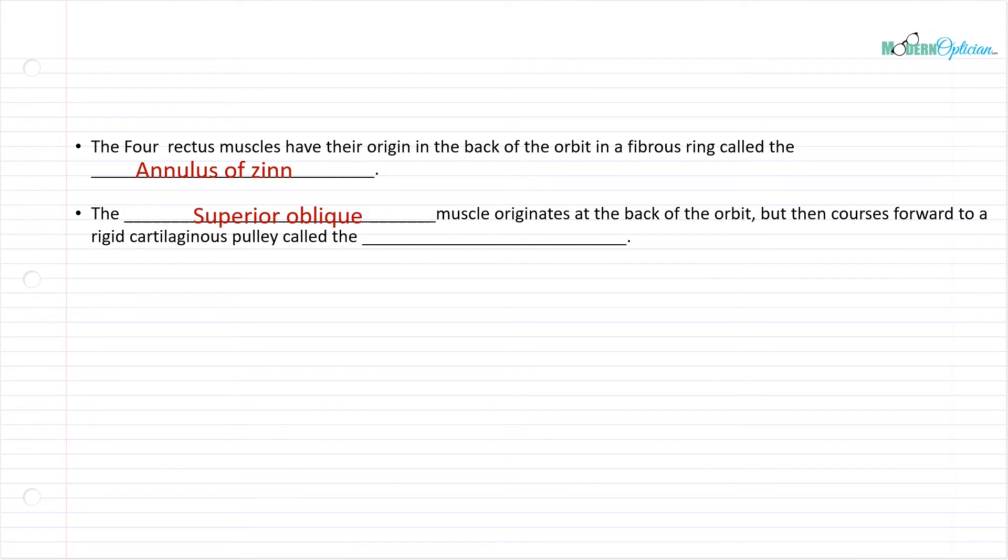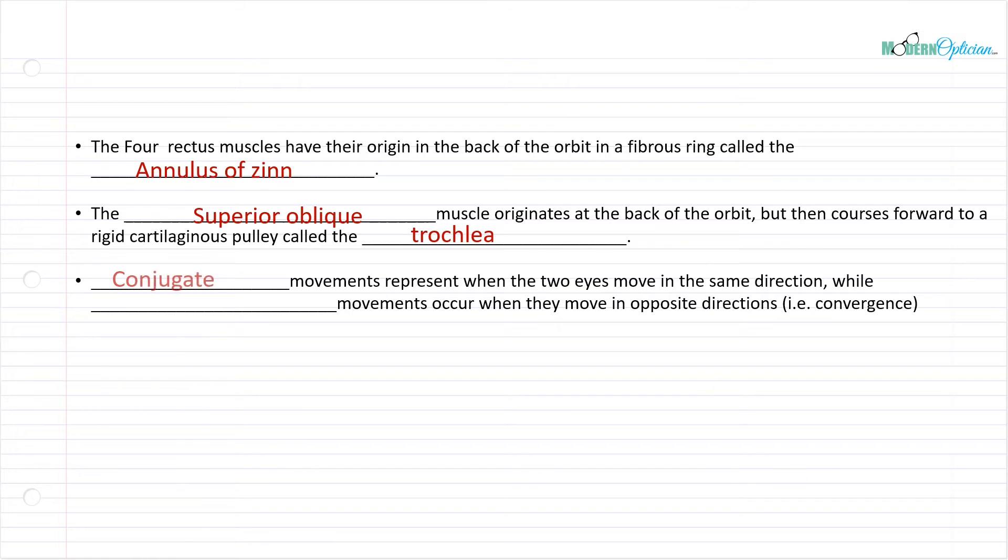The superior oblique muscle originates at the back of the orbit and courses forward to a rigid cartilaginous pulley, basically a pulley made of cartilage, and that's called the trochlea. That's the one muscle that's a little bit unique. It actually has a pulley system that helps do its actions as well.